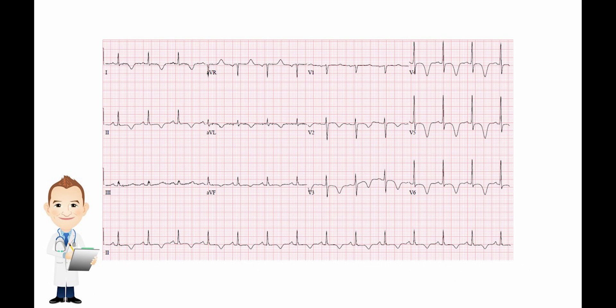This is the next EKG in our series. What we want to look at first is the rate, rhythm, and axis. You're looking at a pretty normal rate, just eyeballing it. I'm not going to count every single one of these. The axis is fine — leads one and two are both upright. There's a P before every QRS. There's nothing irregular about this. However, you want to look over here at the side.